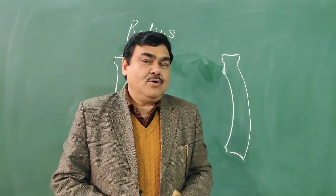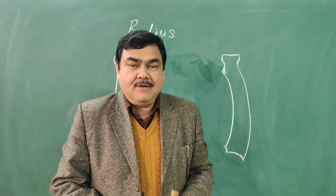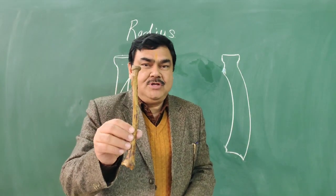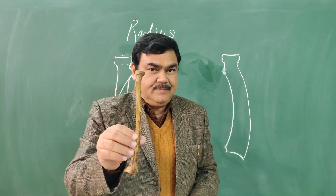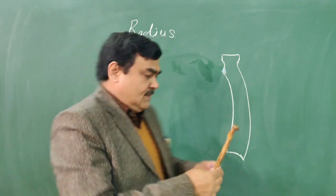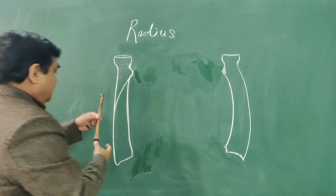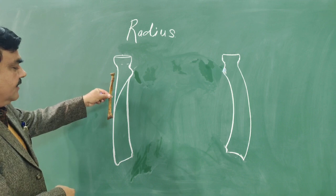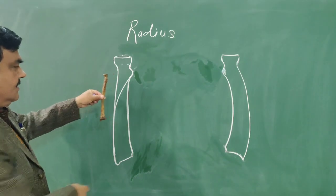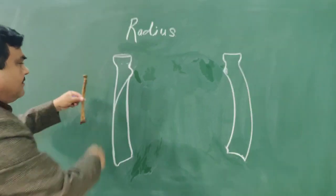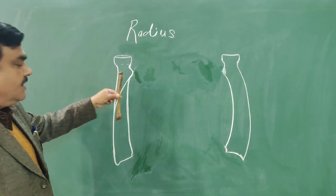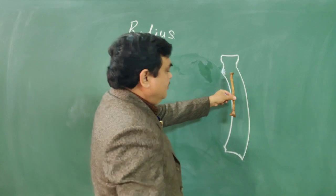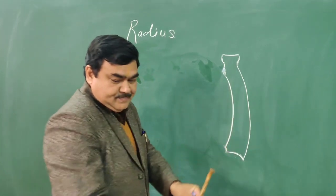Now we will discuss the anatomy of the radius bone. This is the anterior view of the radius and a diagram of the anterior view. This is the posterior view of the radius and its diagram.